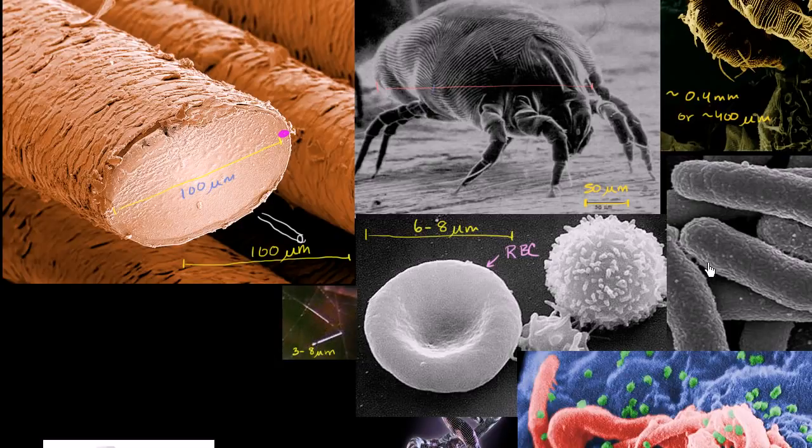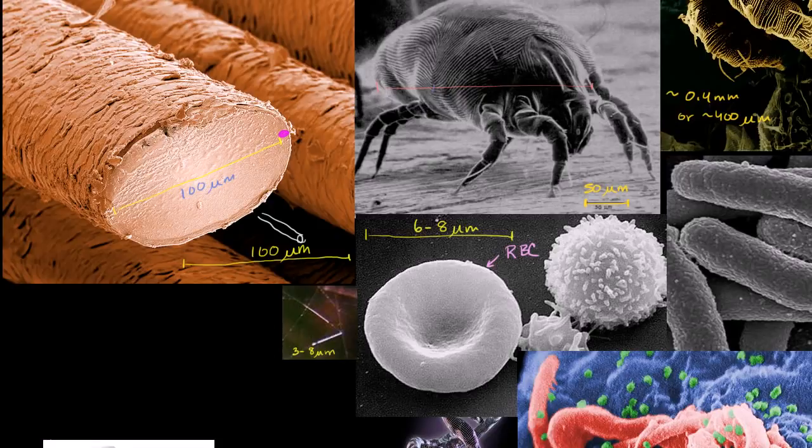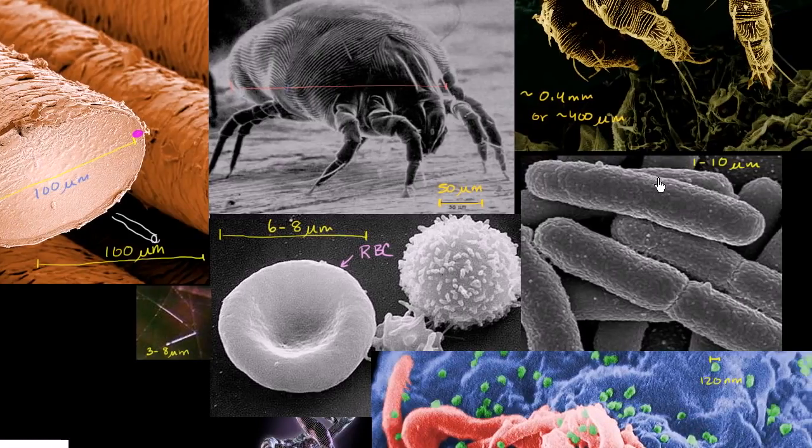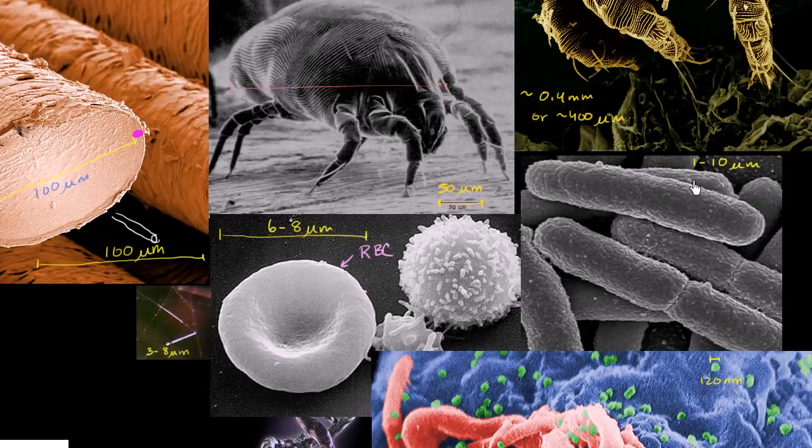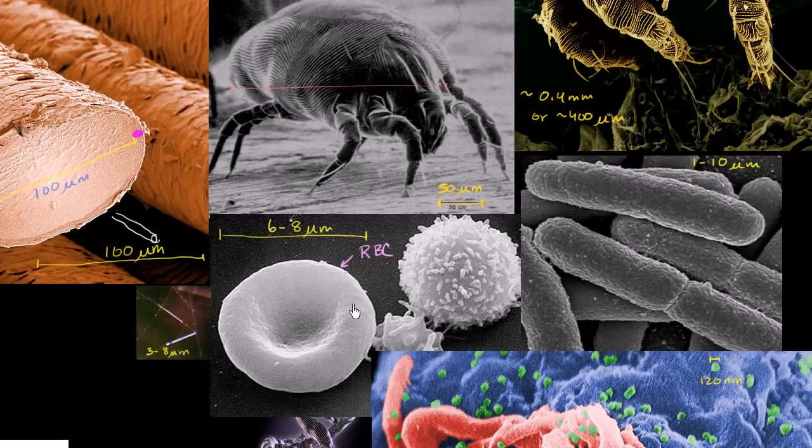At that same range, you start to have some of your larger bacteria. Bacteria can be anywhere from, and I'm speaking very roughly, 1 to 10 micrometers. So in general, they're smaller than cells. Most bacteria are smaller than most cells.